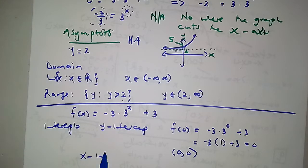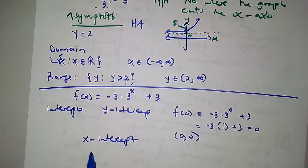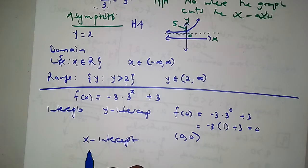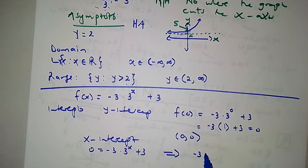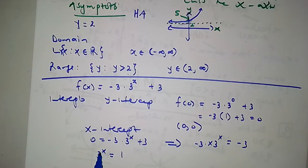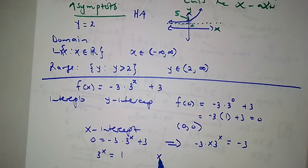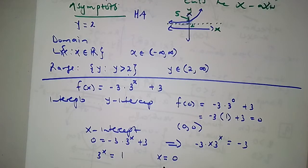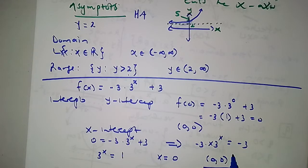For the x-intercept, we set 0 equals negative 3 times 3 to the x plus 3. Rearranging: negative 3 times 3 to the x equals negative 3. Divide both sides by negative 3, giving 3 to the x equals 1. What value of x do you raise 3 to in order to get 1? That is x equals 0. So the x-intercept is also (0, 0).